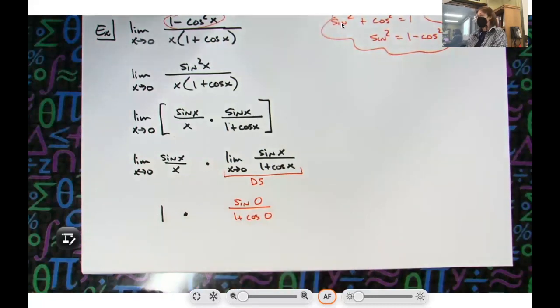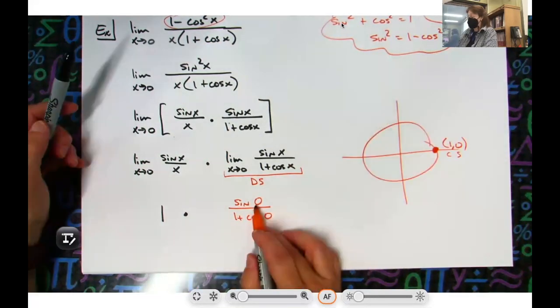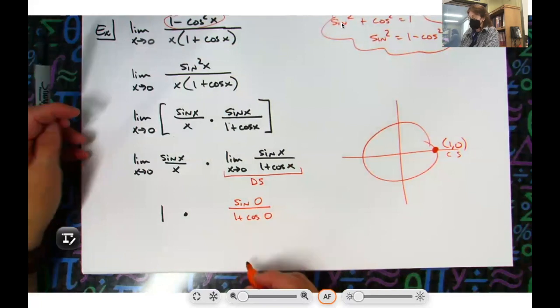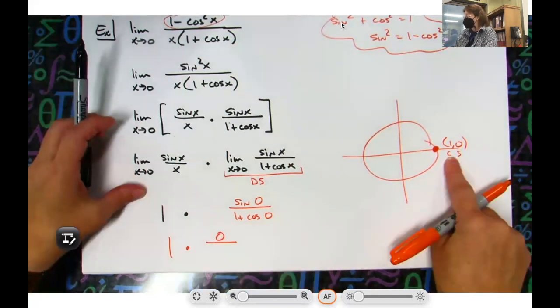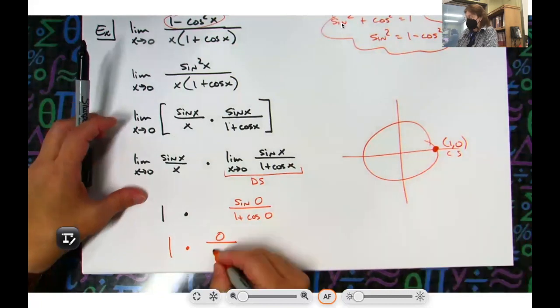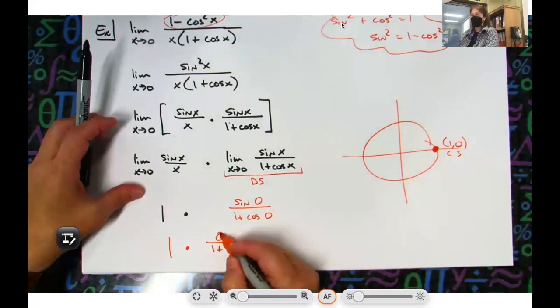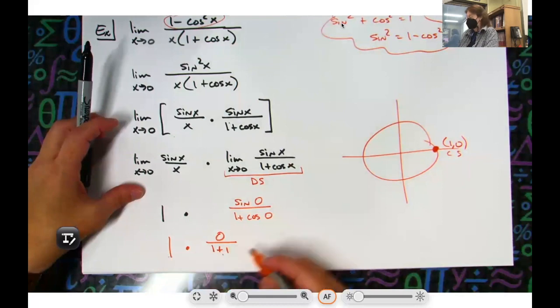Let's see, sine of 0 is 0 on top here. So I've got 1 times 0 on top. Cosine of 0 is 1, 1 plus 1, but doesn't matter because 0 divided by anything is 0. 1 times 0 is 0.